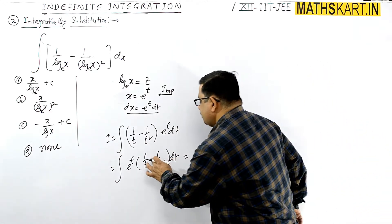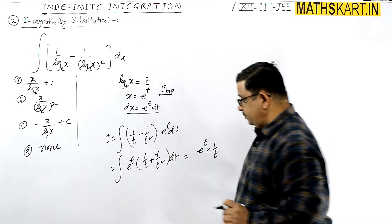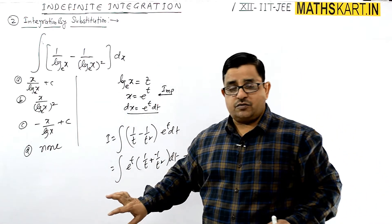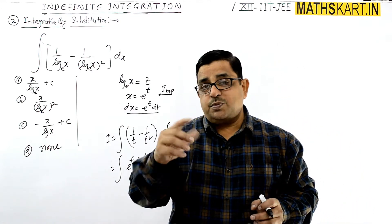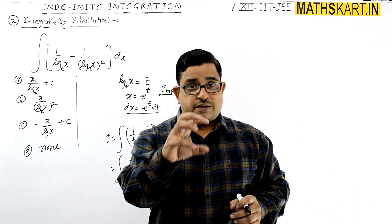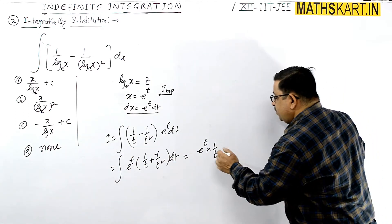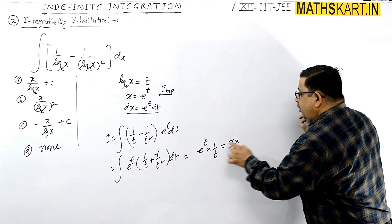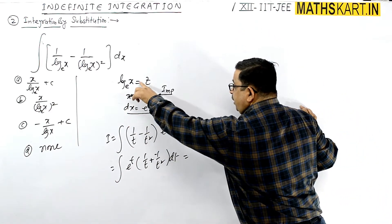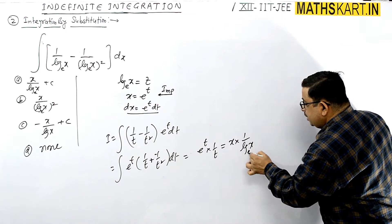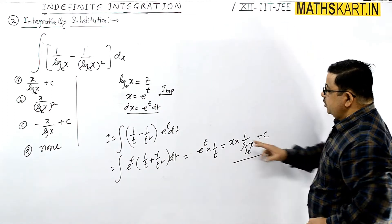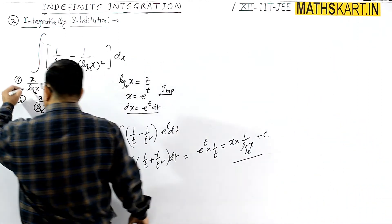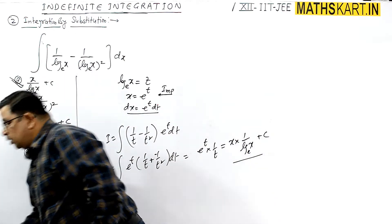Here the positive term is 1/t and the derivative of 1/t is minus 1/t². Using the format e^x [f(x) + f'(x)], the whole expression integrates directly. The value becomes e^t · (1/t). Now substituting back: e^t becomes x and 1/t becomes 1/log x. So the answer is x upon log x + C. Option A is correct.